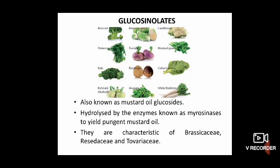Coming to glucosinolates. Glucosinolates are also known as mustard oil glucosides. They are hydrolyzed by enzymes known as myrosinases to yield pungent mustard oil. They are characteristic of Brassicaceae, Resedaceae, and Tovariaceae — all mustard family plants.